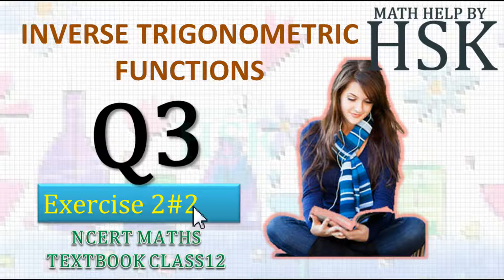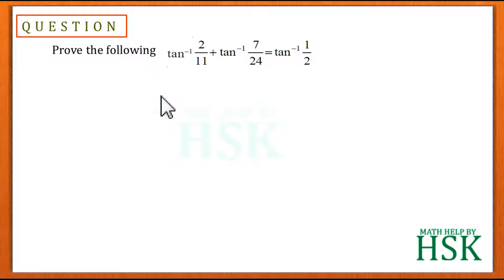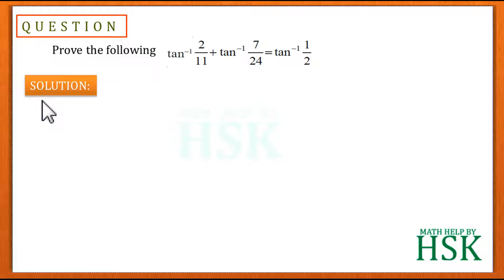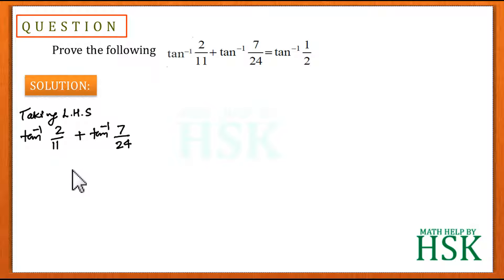Taking question number 3 of exercise 2.2 from the chapter inverse trigonometric functions. We have to prove that tan⁻¹(2/11) + tan⁻¹(7/24) is equal to tan⁻¹(1/2). To prove this identity, we first take the left hand side, which is equal to tan⁻¹(2/11) + tan⁻¹(7/24).